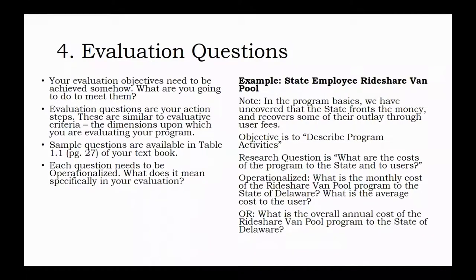As an example, I'm interested in the State of Delaware's State Employee Rideshare Van Pool — a program that the state uses to help state employees from all over Delaware commute to Dover for work together. Employees meet a van at a predetermined place, usually a park and ride near where they live, and ride to Dover together to work in one of the state's office complexes. In my imaginary evaluation, I've already established that the state pays the cost of the program but collects a fee from users in the form of a pre-tax payroll deduction to defray some of the costs. This leads to my objective, which is describing program activities. My research question is: what are the costs of the program to the state and the users?